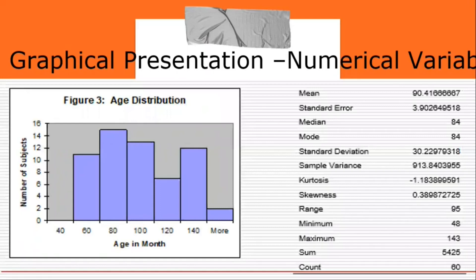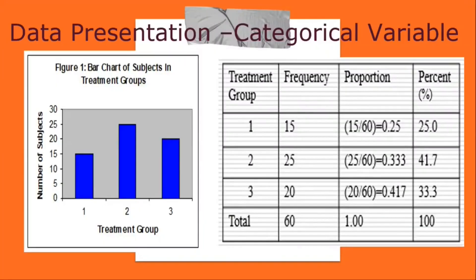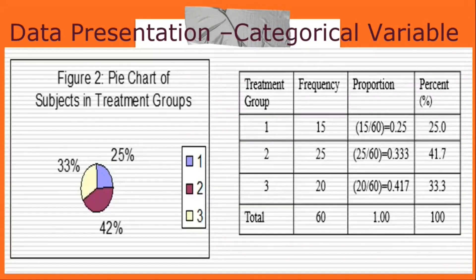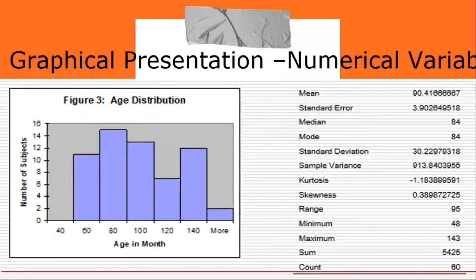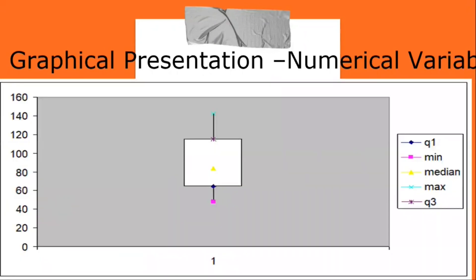For categorical variables, a bar diagram and a pie chart list the categories and present the percent or count of individuals who fall in each category. For numerical variables, a histogram's overall pattern can be described by its shape, center, and spread. For example, an age distribution that is right-skewed has its center lying between 80 and 100, with no outliers.